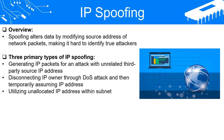IP spoofing. Spoofing is a technique used to alter data by modifying the source address of network packets. This can make it difficult for victims to identify the true attackers or originators of a communication. When the source address is spoofed, the attacker can redirect packet responses, replies, and echoes to a different system. This is evident in Smurf, Fraggle, and Land DOS attacks.